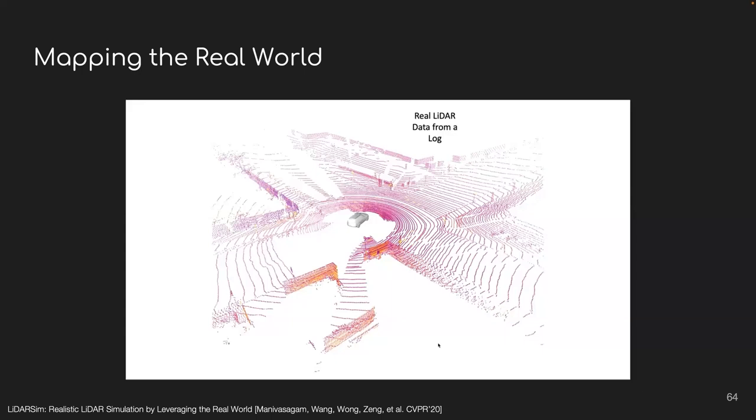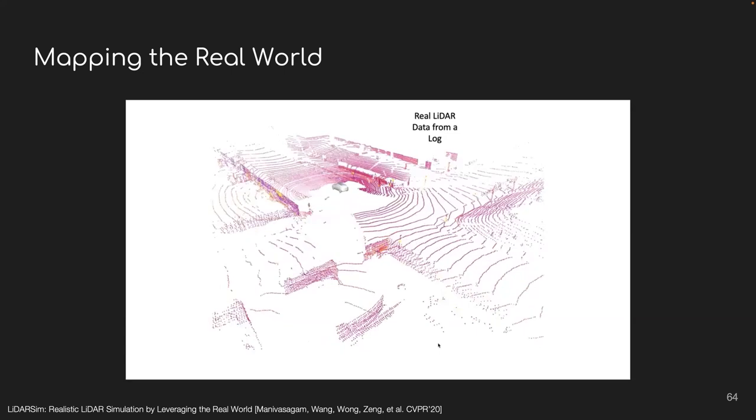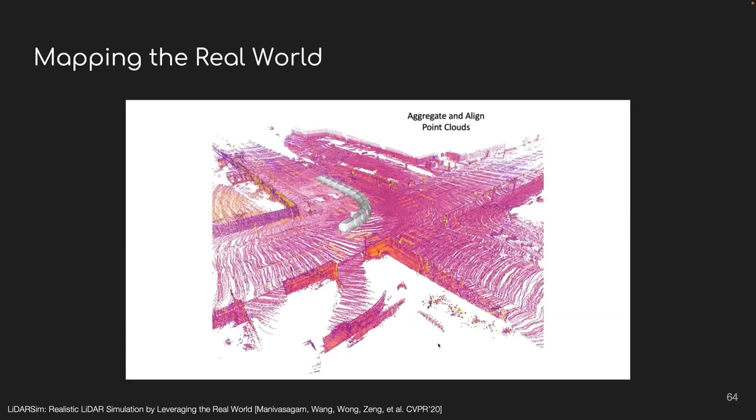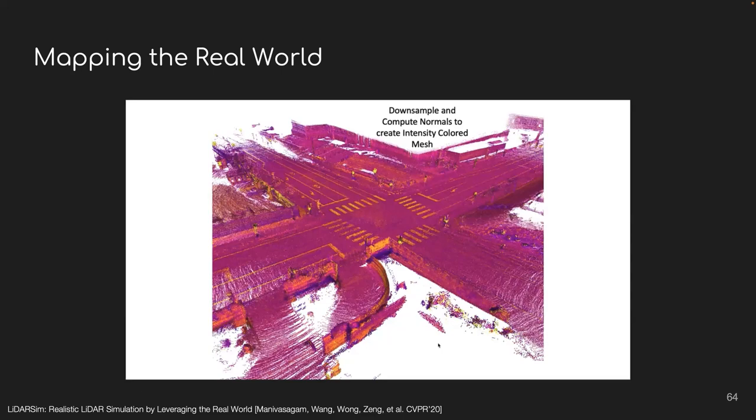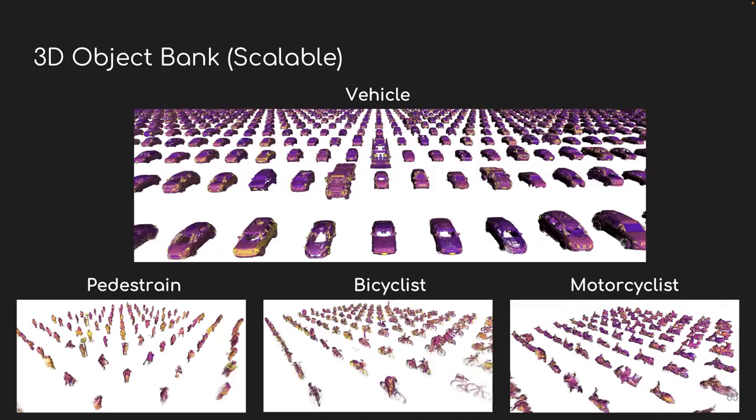So here I show how we reconstruct the geometric model of the world from our data rather than creating those world models by designers. In particular, we firstly drive in the city to collect raw LiDAR data and align them together. This gives us a dense point cloud after fusion. We then remove all layers and meshify the point cloud to get the final results. Using a similar approach, we can also reconstruct and build a large-scale 3D asset bank for different actors.